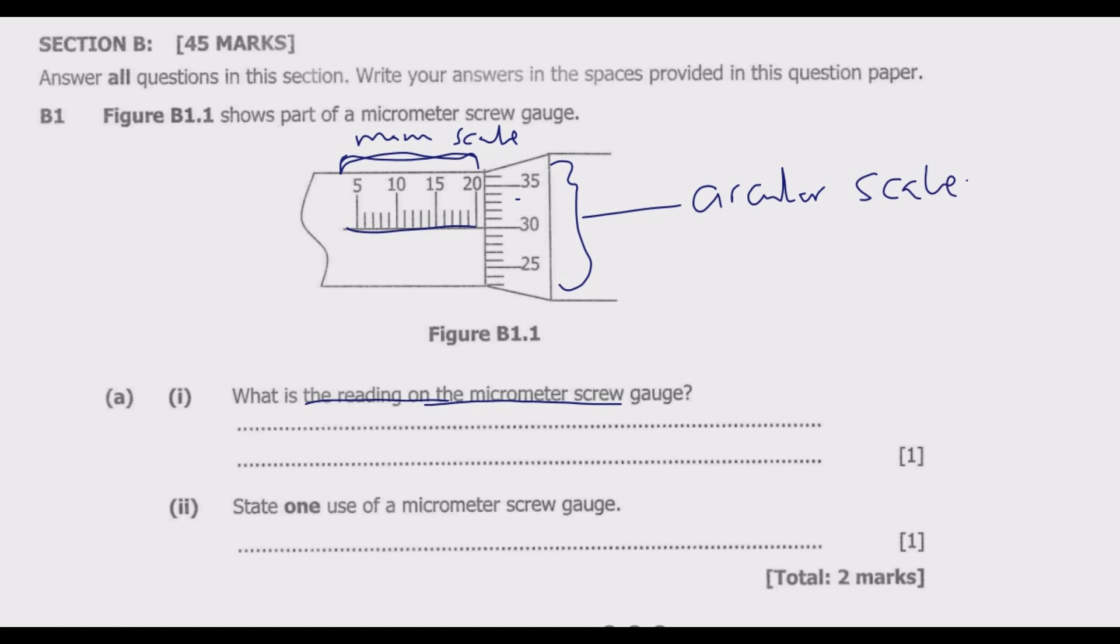Just to emphasize, in case you have to label this, this is known as the sleeve of the scale. Then all this part, this area, is known as the thimble.